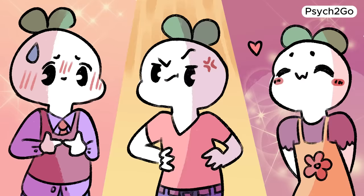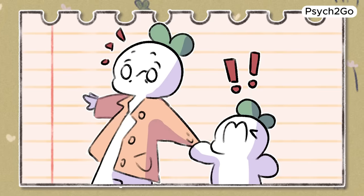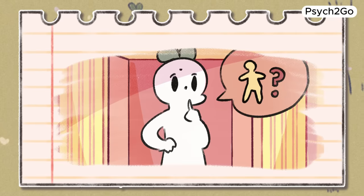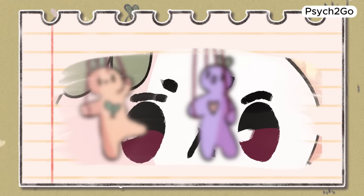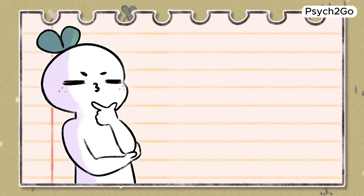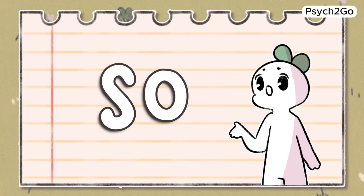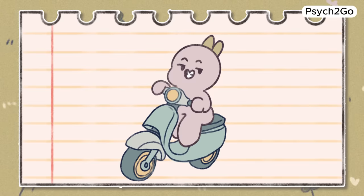Everyone has the ability to manipulate. Even as young kids, we lie and deceive our parents, or at least we try. As we grow and learn about ourselves and other people, the manipulation tactics we encounter become more sophisticated. It can be hard to distinguish between manipulation and honesty. So we decided to explain the most comprehensive list of manipulation tactics as fast as possible.